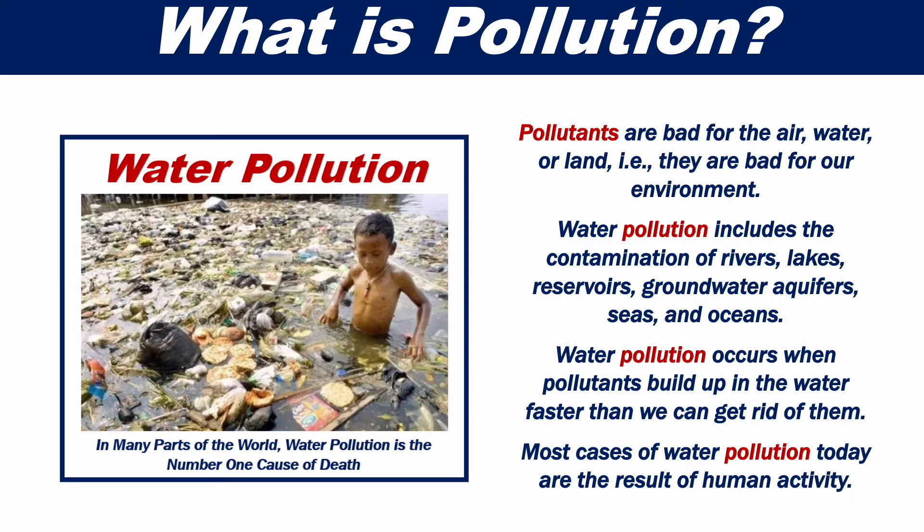Water pollution includes the contamination of rivers, lakes, reservoirs, groundwater aquifers, seas, and oceans. Water pollution occurs when pollutants build up in the water faster than we can get rid of them. Most cases of water pollution today are the result of human activity.